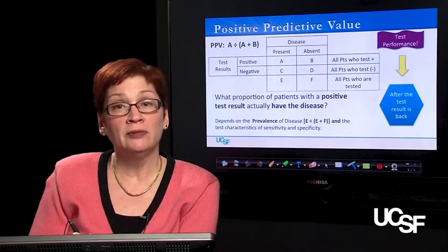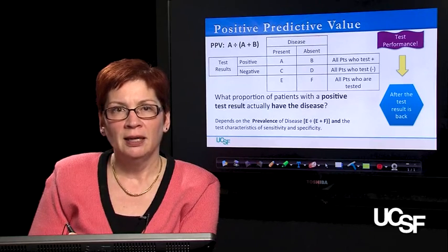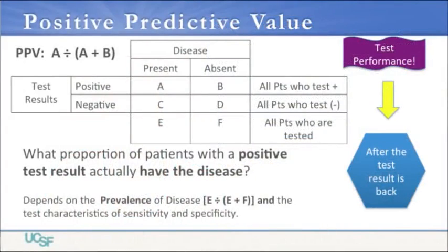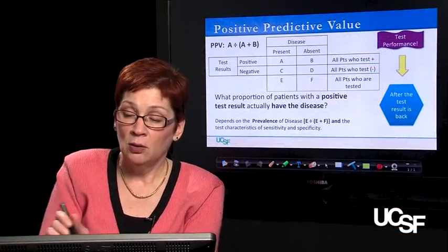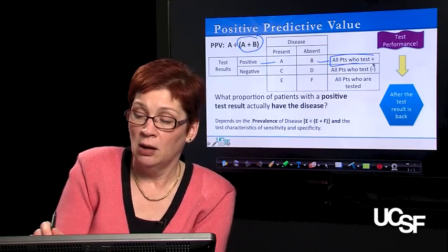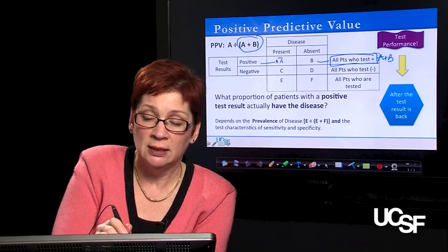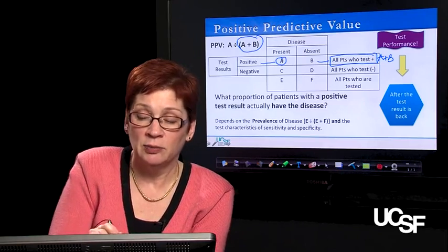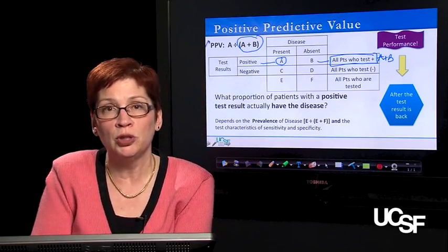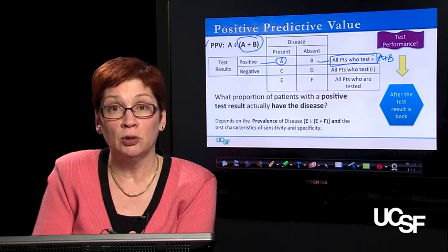To answer what a positive test means for my patient, we use the statistic positive predictive value (PPV). PPV answers the question: what proportion of patients with a positive test result actually have the disease? All patients with a positive test result is A plus B. The proportion of those who actually have the disease is A over A plus B. That's the positive predictive value, and it will be the most useful information as we begin testing patients and comparing results to our clinical pretest probability.